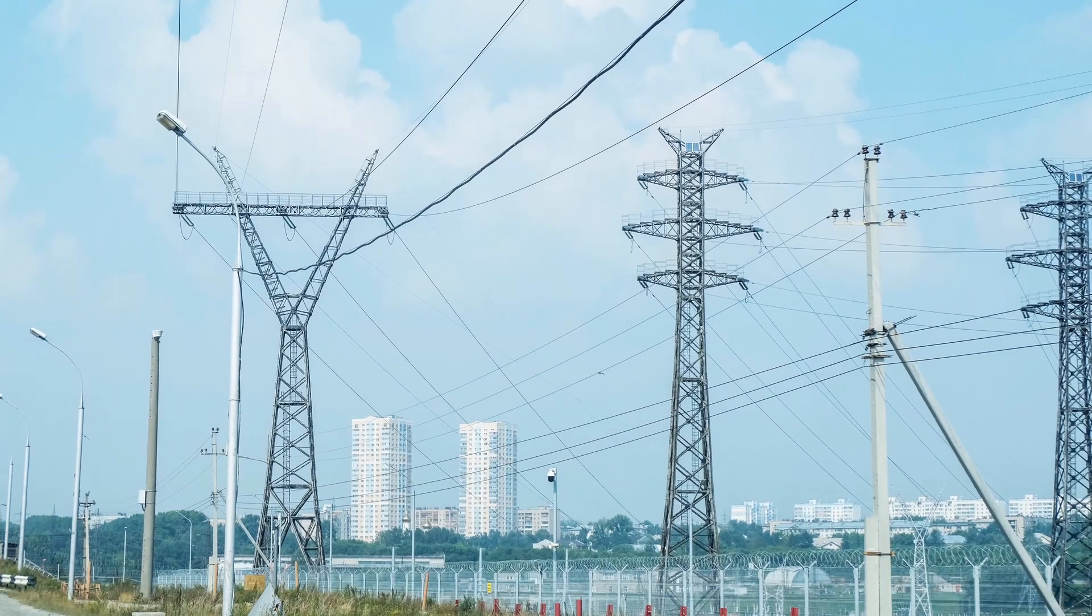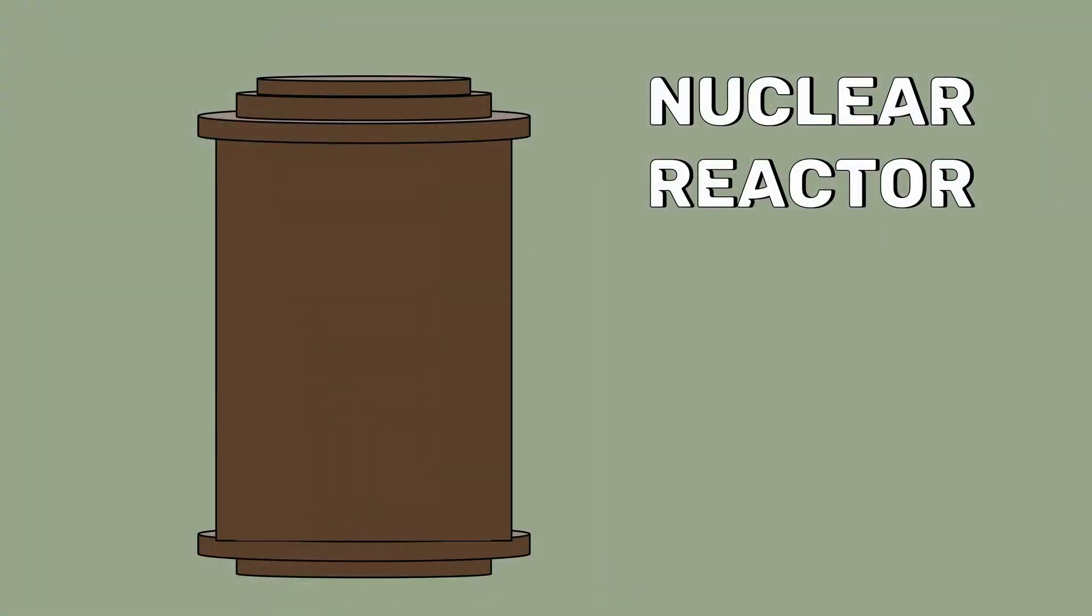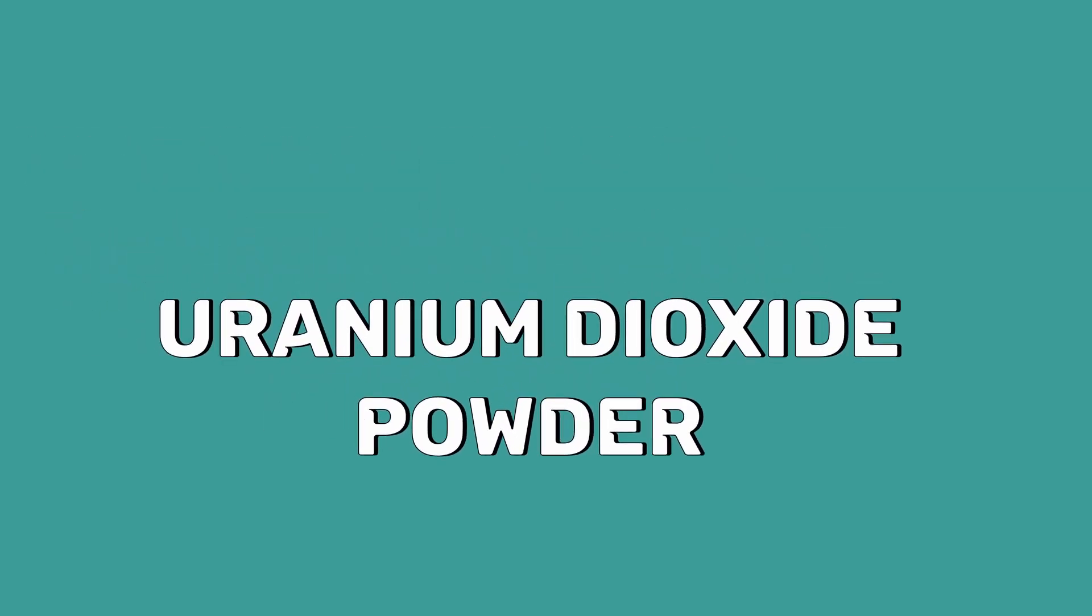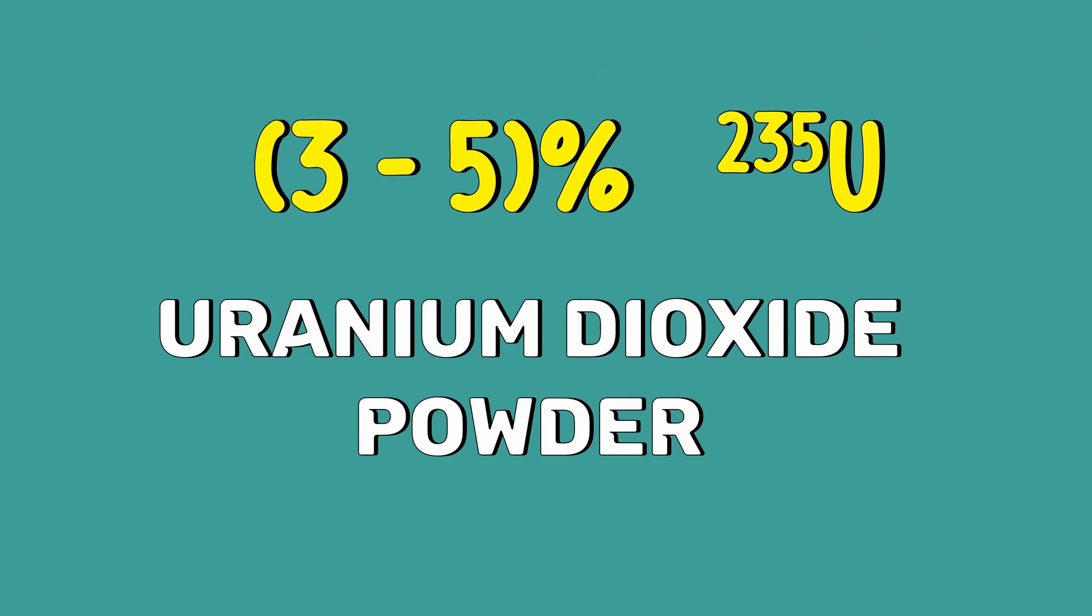This releases a huge amount of thermal energy. This thermal energy is converted into electrical energy. Nuclear reactors use uranium dioxide powder, which is 3-5% uranium-235, as the fuel material.